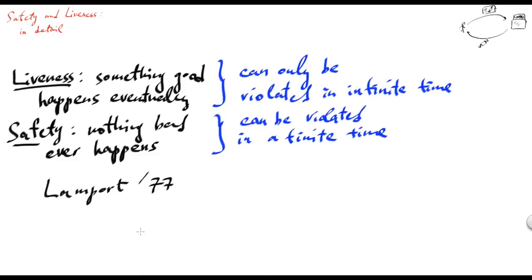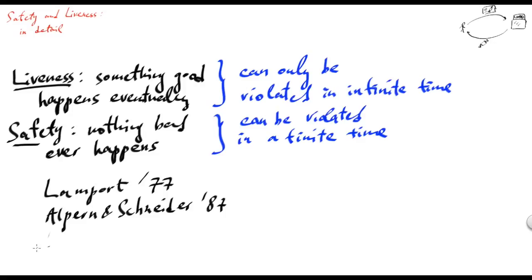And then later on, they were formally defined and analyzed by Alpern and Schneider for the case of infinite executions, and then extended by Nancy Lynch for the case of both finite and infinite executions.